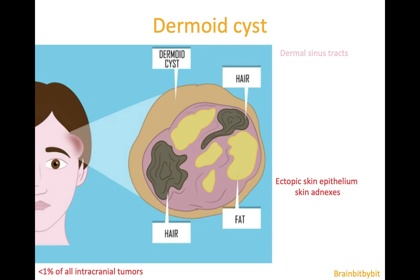In this brain bit by bit, I'm going to show images of dermoid cysts, which can occur anywhere along the midline and are pretty rare intracranially.